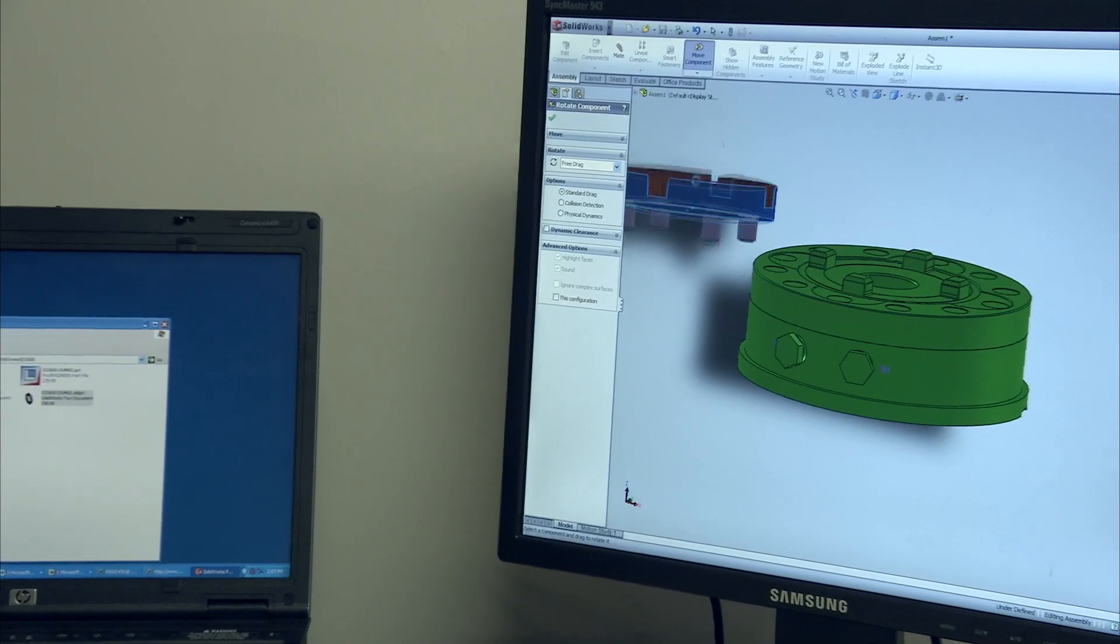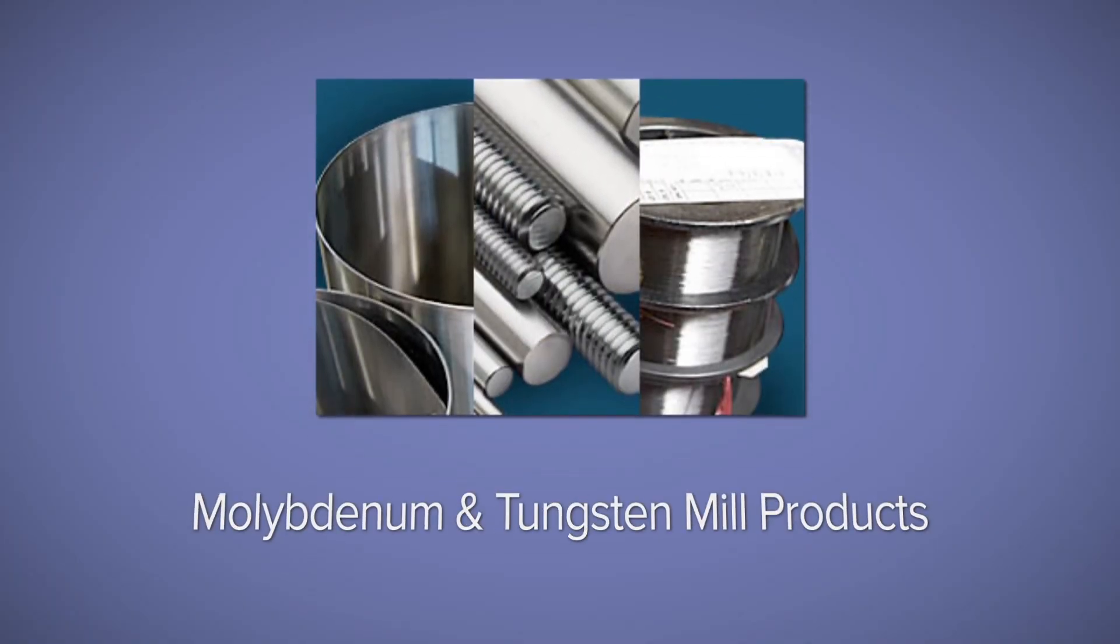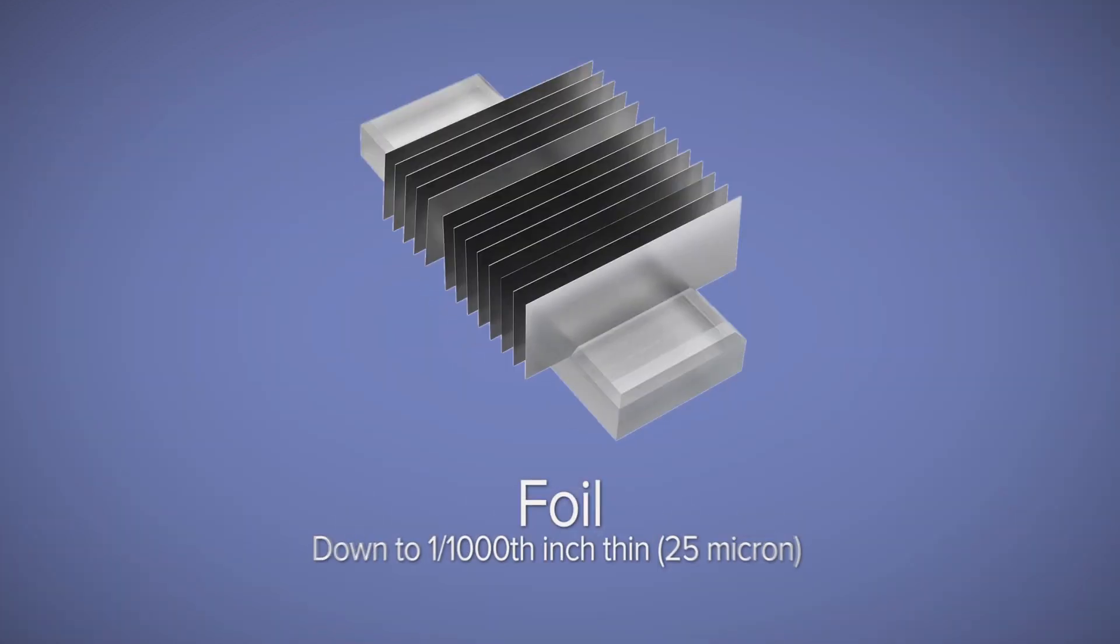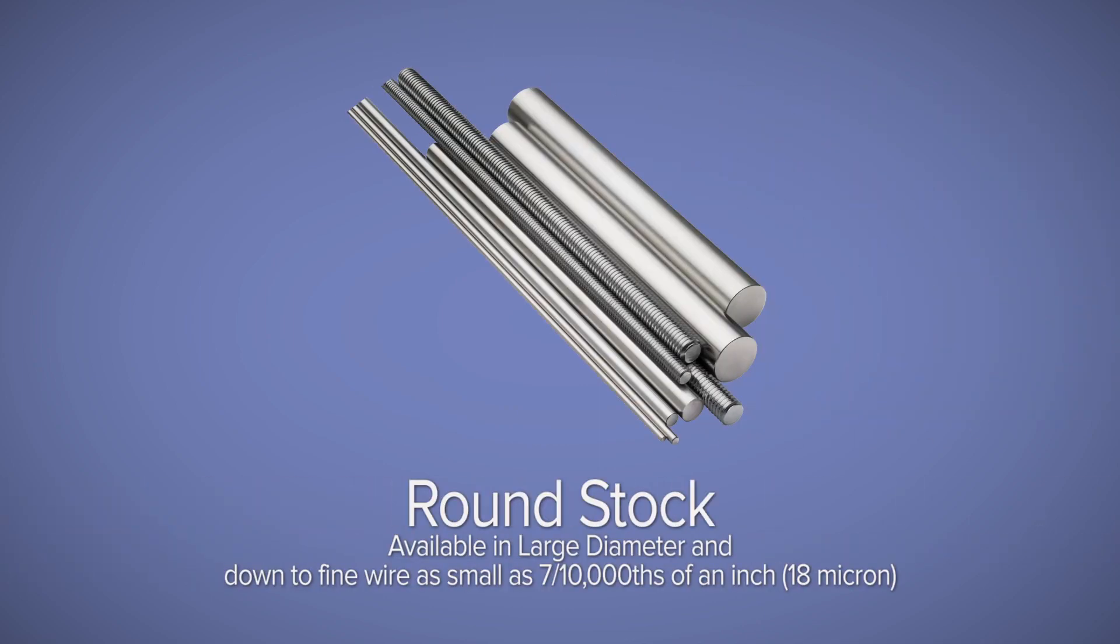Our extensive line of molybdenum and tungsten mill products ranges from wide plate down to foil one thousandth of an inch thin. Round stock is available from large diameter rod down to fine wire as small as seven ten thousandths of an inch.